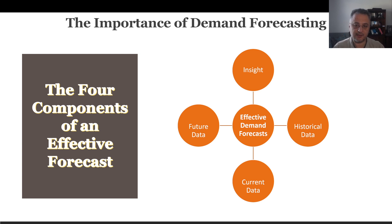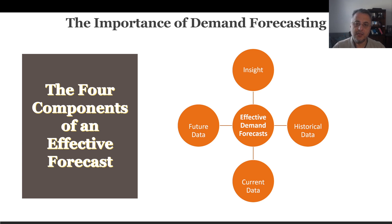The first component is historical data — events that already happened in the past. You always have that data. The second is current data — events happening right now or in the very near term. The third is future data — events that will happen in the future. The fourth, and most important, is insight, which requires the human touch — what the revenue manager does. Insight means understanding how things work, cause and effect. It usually comes from experience and analytical skills.